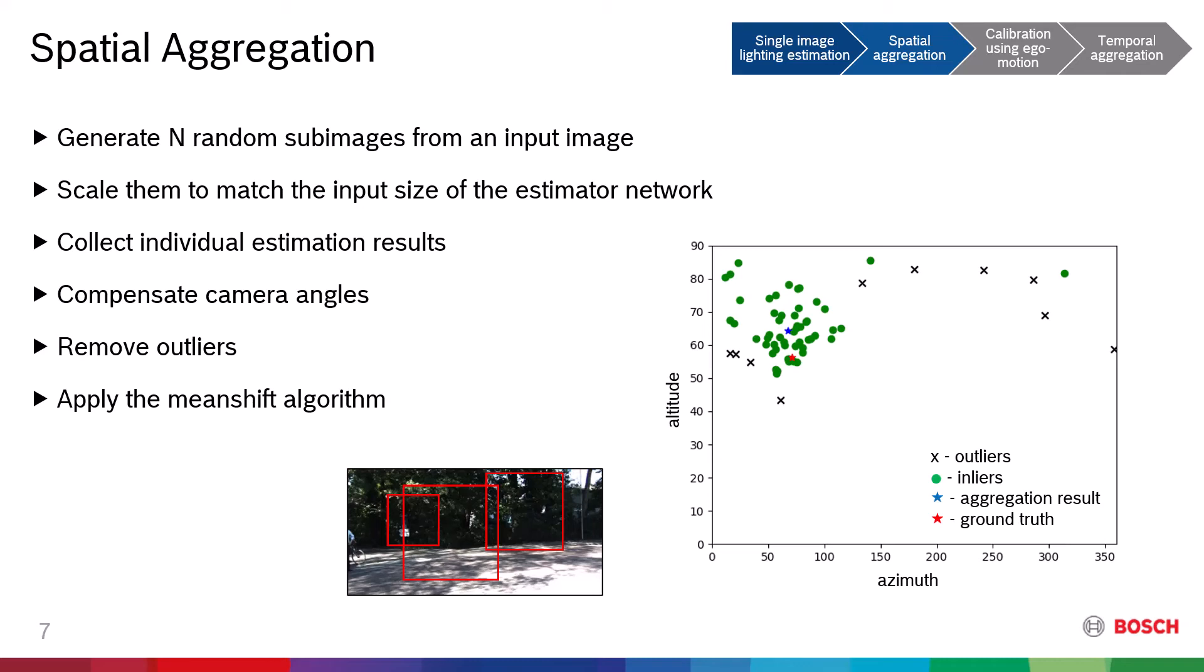Here is an example of spatial aggregation. From the noisy observations, outliers denoted with X marks are removed. The spatial aggregation result is indicated with a blue star, which is the densest point of the green dot inliers.